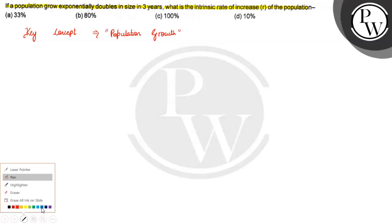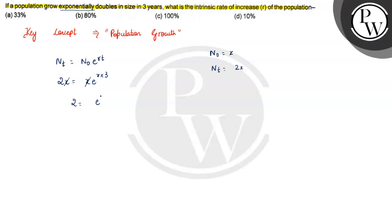So let's dive into the question now. For exponential growth, what is the equation? Nt is equal to N0 e to the power of rt. What is the number of years time? 3 years. So 3r. So we will write 2Nt equals N0 times e to the power of 3r. N0 and N0 cancel. So 2 is equal to e to the power of 3r.